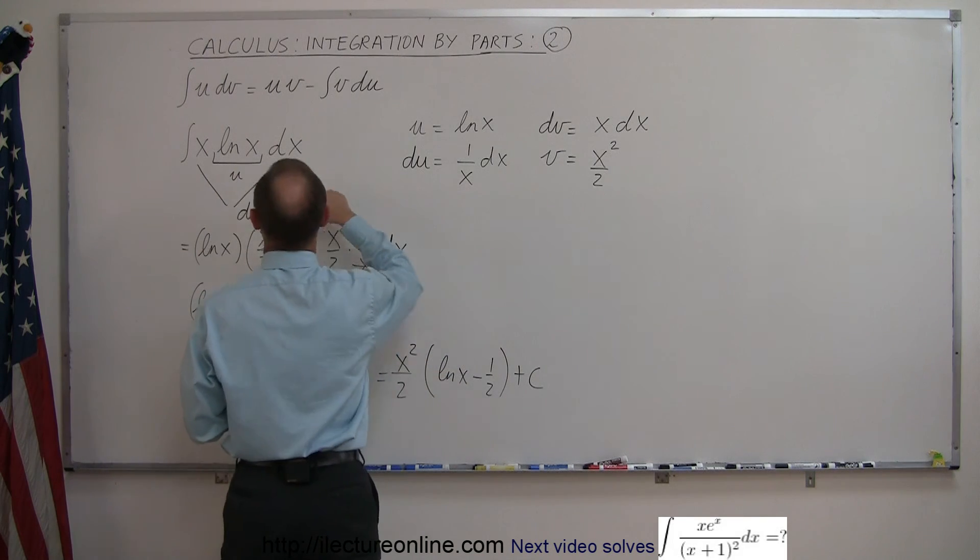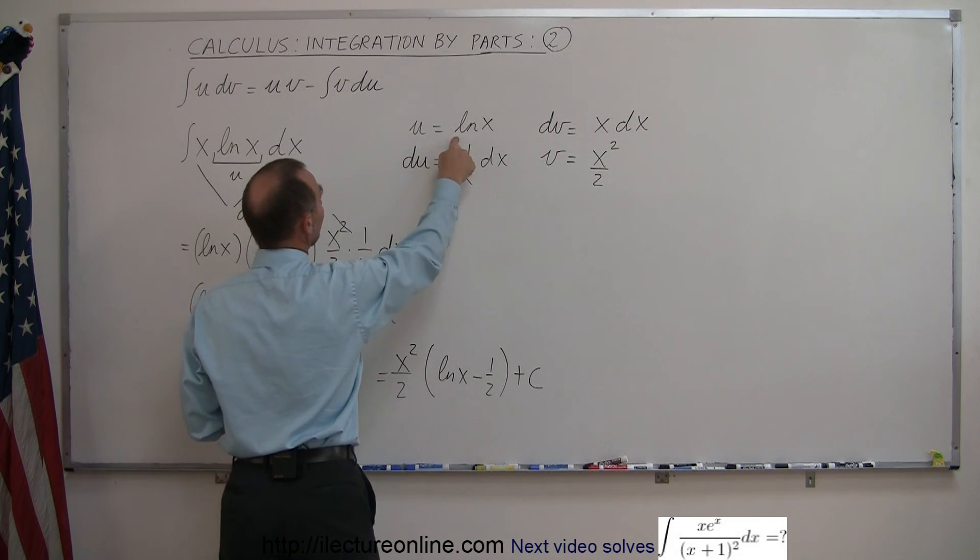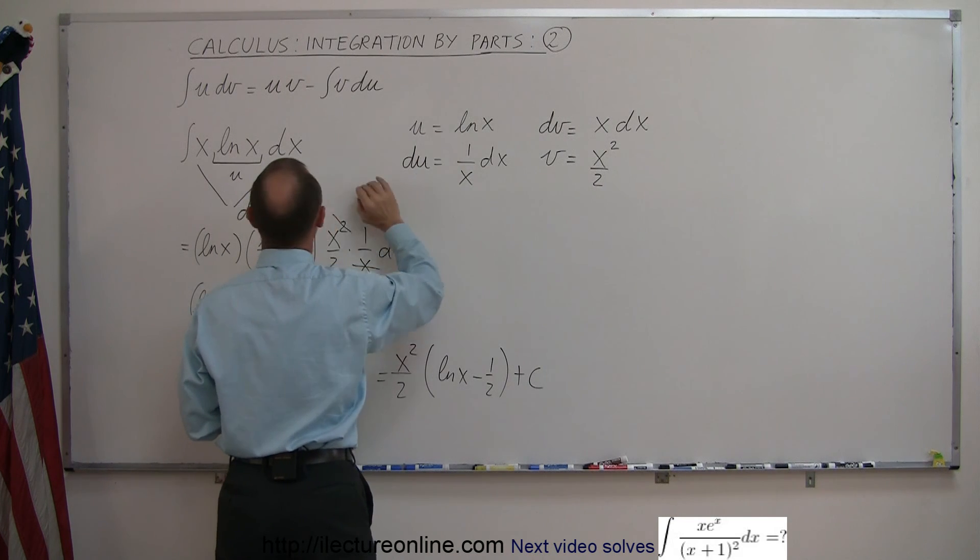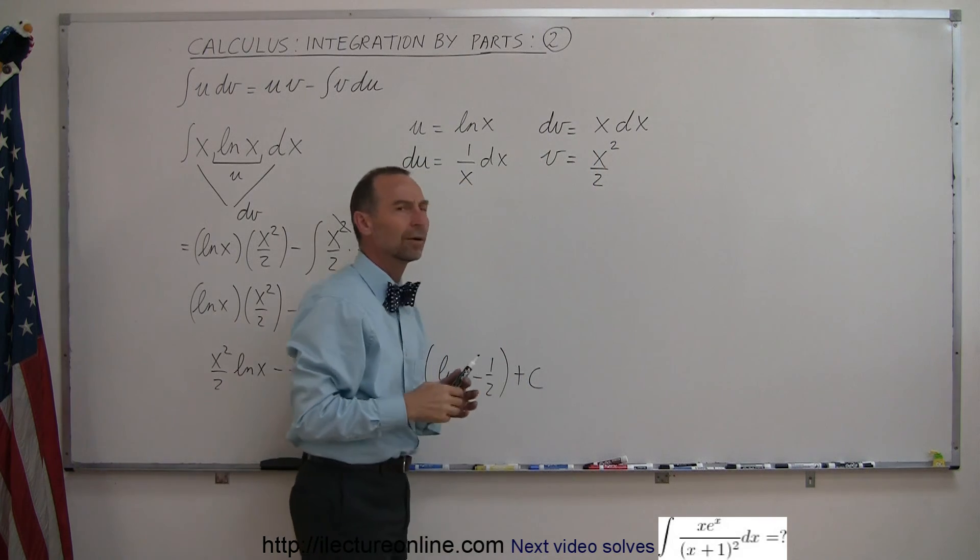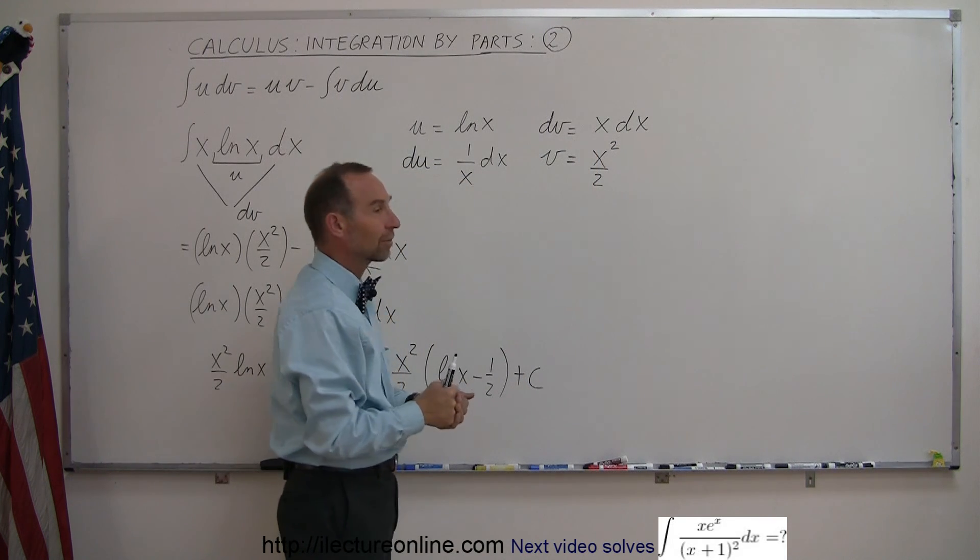I can find the derivative of x really easy, so the derivative of x is dx. But then if I choose natural log for dv, I would have a problem: how do you integrate the natural log of x? Matter of fact, it turns out you can actually integrate the natural log of x using integration by parts, and later on I'll show you an example of that.